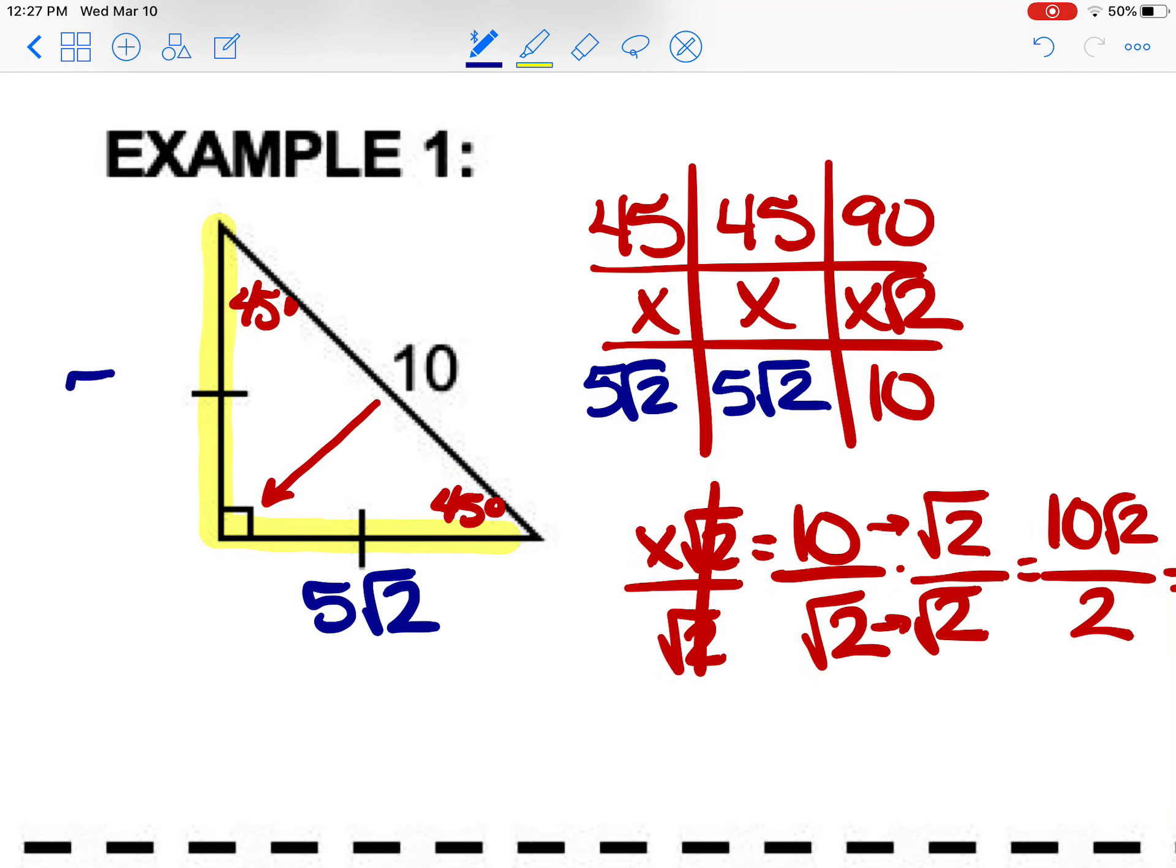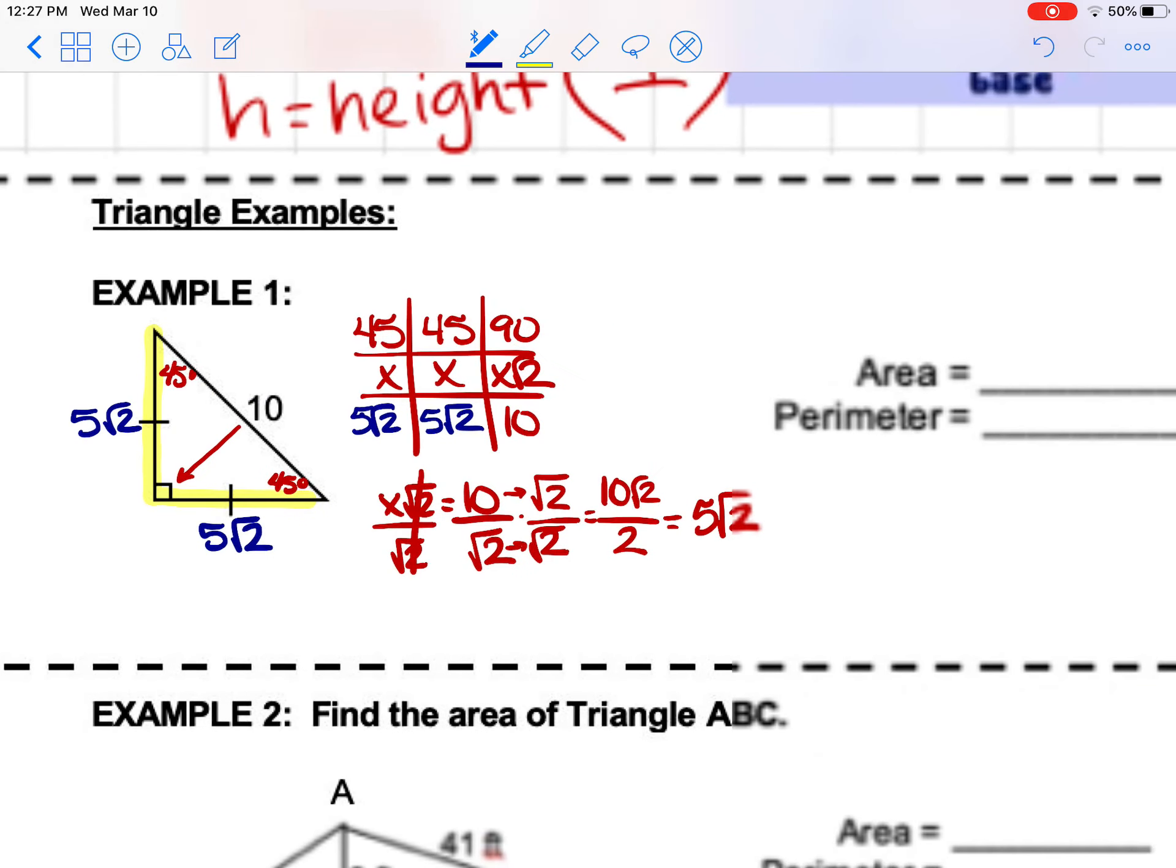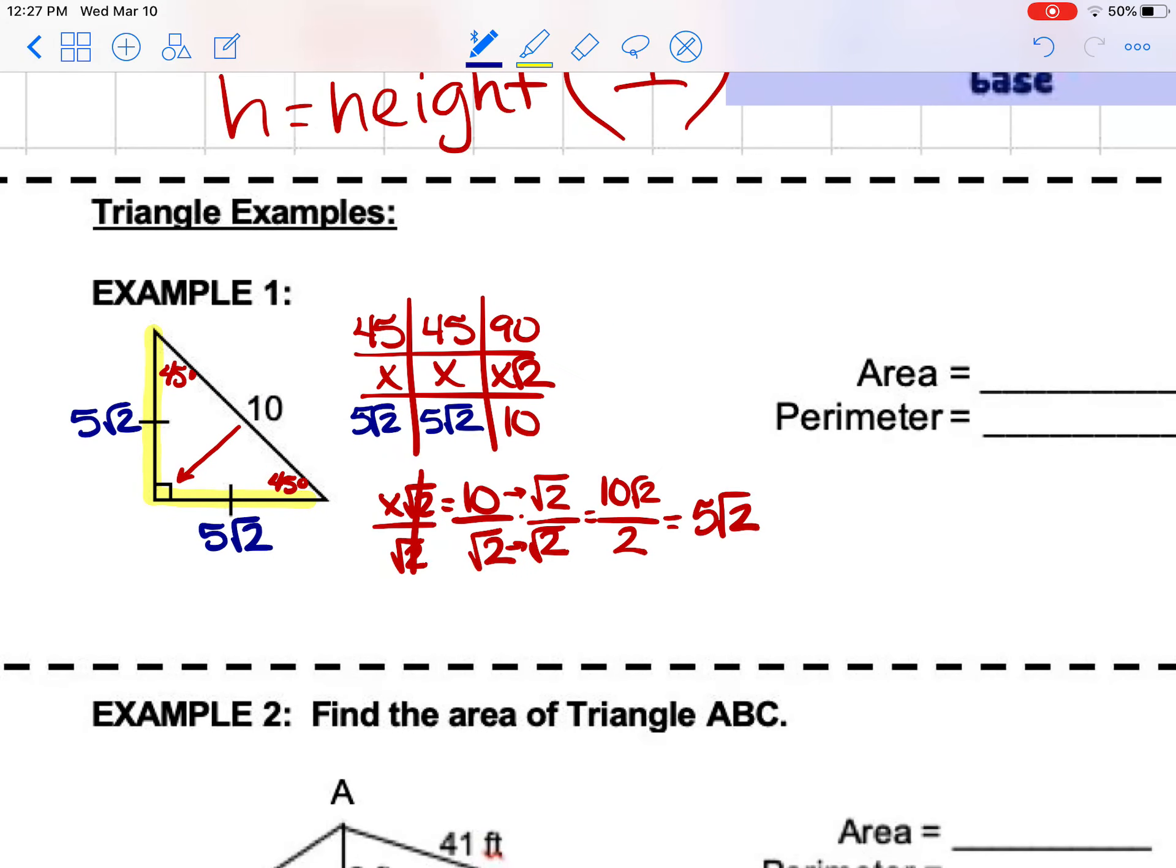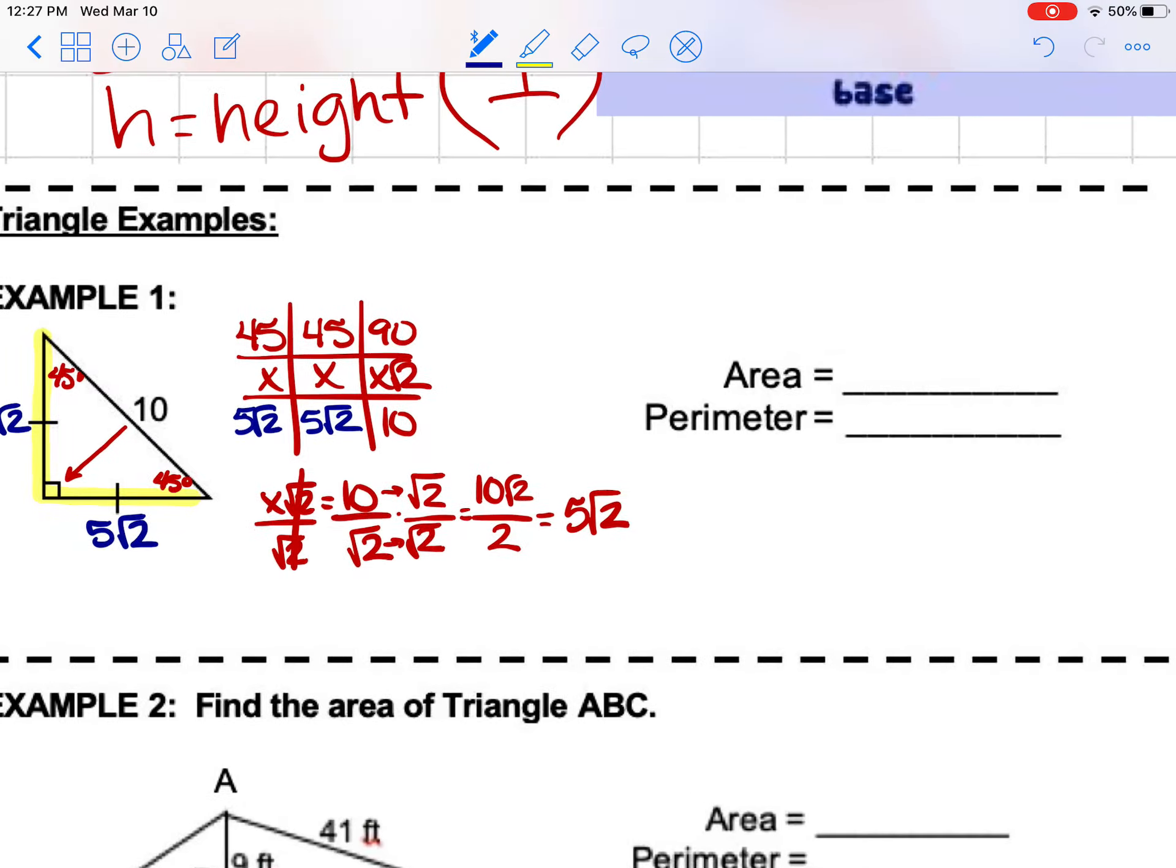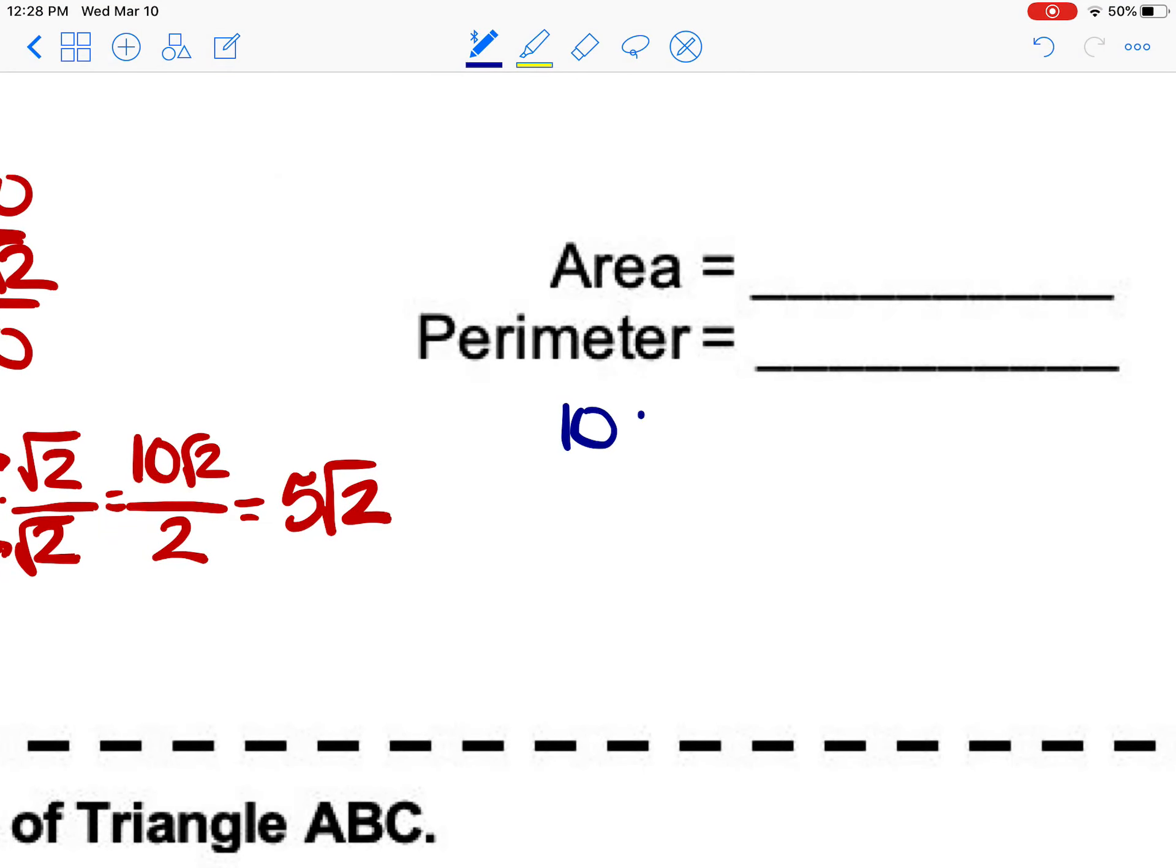So now we have everything we need. Now let's review how to work with radicals, because they do want us to find the perimeter and the area. Remember, perimeter is just adding up all the three sides. So if we're doing the perimeter here, we know the sides are 10 plus 5 square root of 2 plus 5 square root of 2. Those are your three sides.